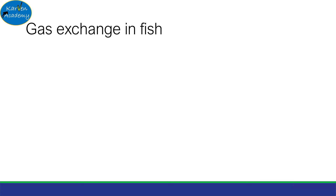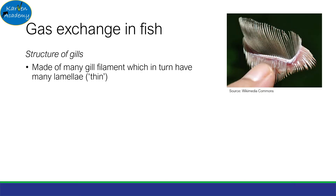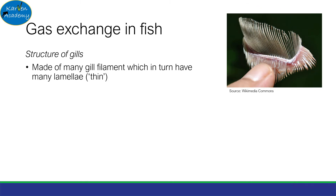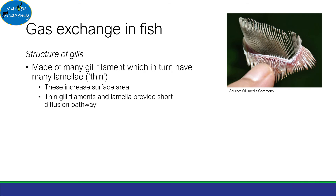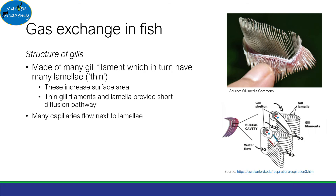Now let's look at the gas exchange system in fish. Unlike terrestrial, or land animals, fish have no lungs — they use gills. The gills are made of many gill filaments, which are the thin air-like structures visible in the image. The filaments consist of lamellae, which cannot be seen by the naked eye. The word lamellae is derived from the Latin meaning thin. Both these structures increase the surface area of the gills, and since both are thin, they provide a short diffusion pathway. Additionally, many capillaries flow next to the lamellae, so a steep concentration gradient for oxygen diffusion can be maintained.